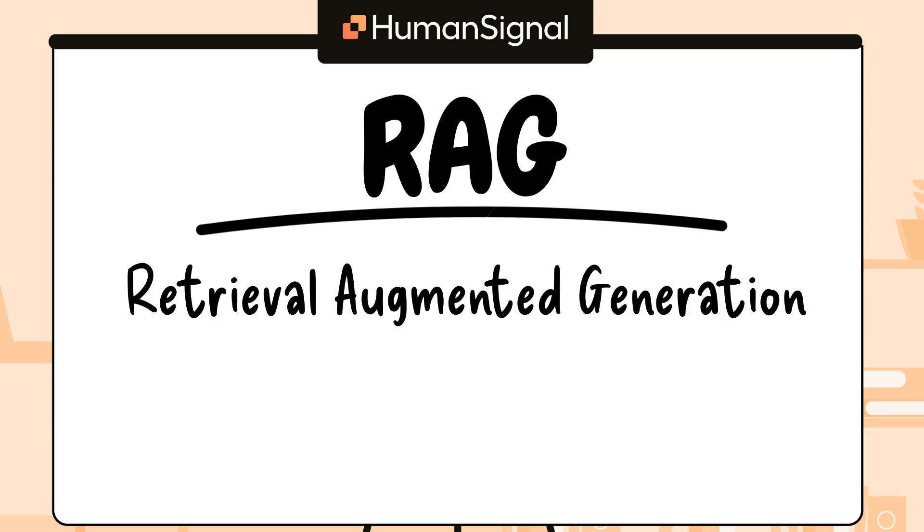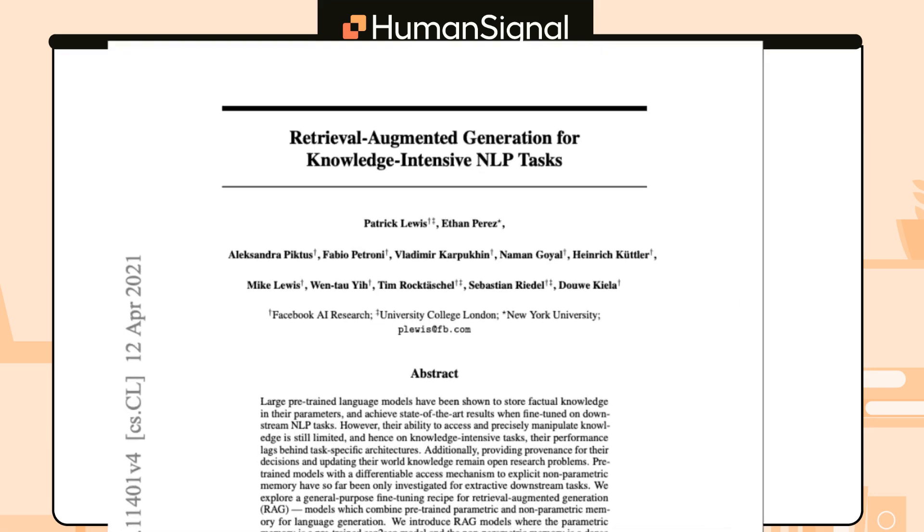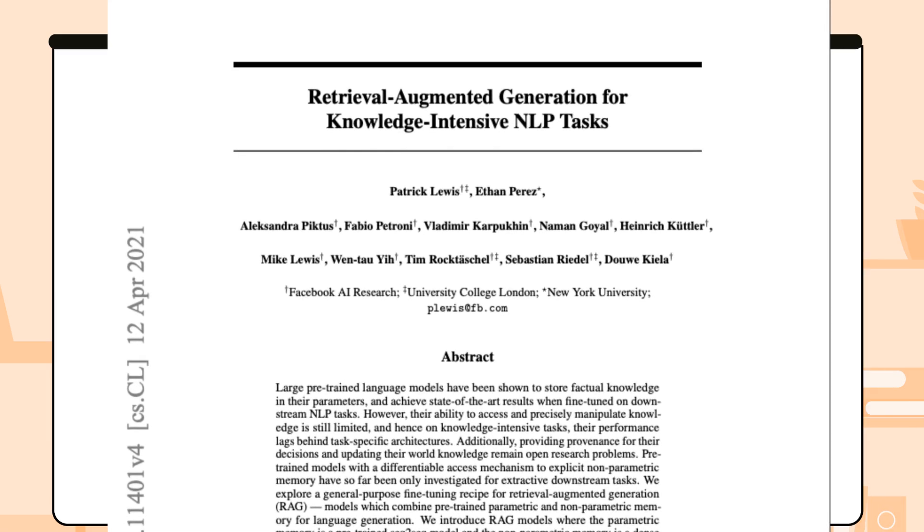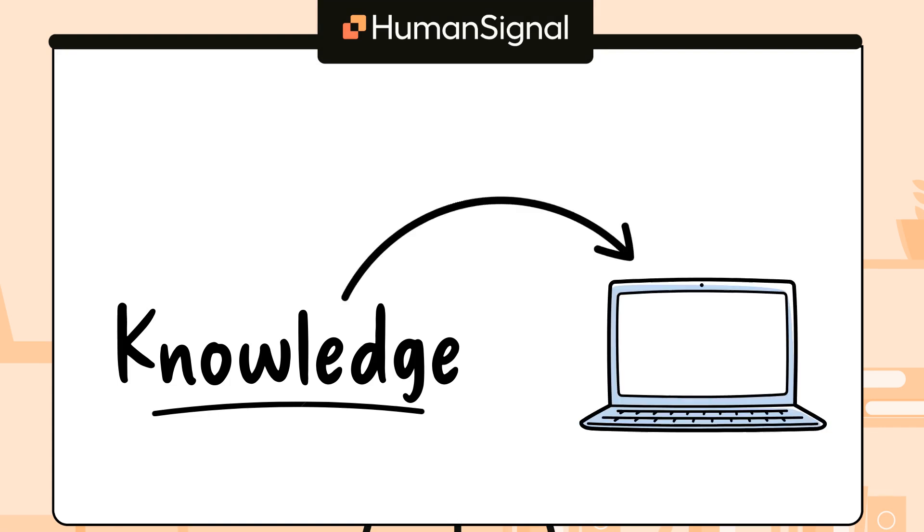RAG, which stands for Retrieval Augmented Generation, comes from a 2020 paper by Lewis et al. called Retrieval Augmented Generation for Knowledge Intensive NLP Tasks. In essence, RAG is a method of connecting a knowledge base to a large language model, or LLM, so that you can provide more specialized context to your generated answers.